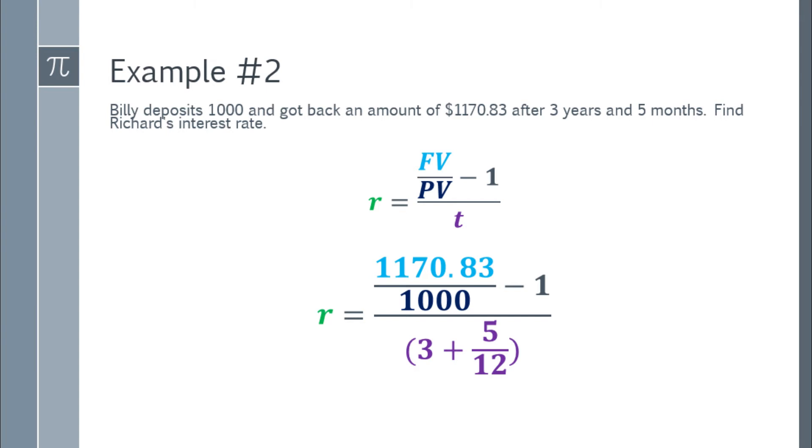We divide by the quantity 3 plus 5 over 12. Why 3 plus 5 over 12? 3 years, right? Next, 5 over 12. Since time depends on years and the given is 5 months, that will be, there are 12 months in a year, right? So your 5 months is 5 over 12. The denominator will be 3 plus 5 over 12.